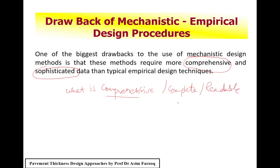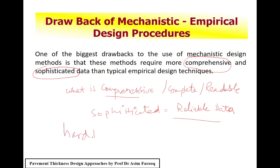The main drawback of the mechanistic empirical method is that it requires more comprehensive and sophisticated data. Comprehensive data means data that is complete, meaningful, readable, and understandable. Sophisticated data means that the data received from the field must be reliable, validated, and calibrated. This is a significant drawback because obtaining such data is very hard, and expenses may increase by 3 to 4 times.